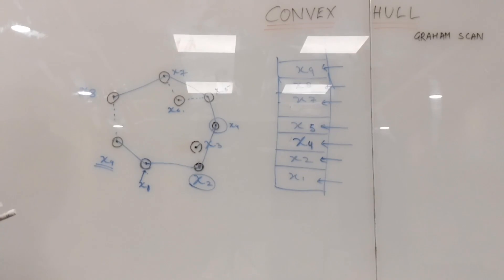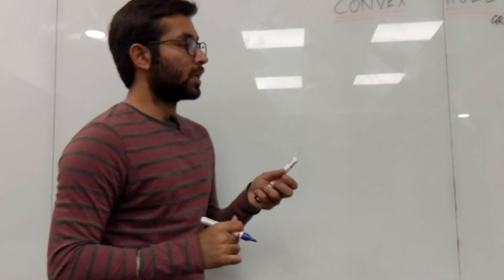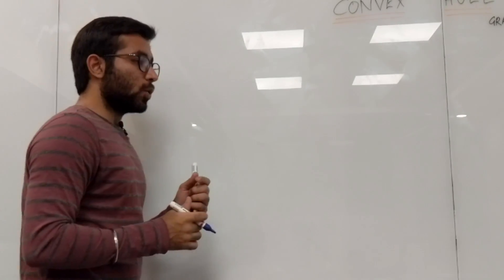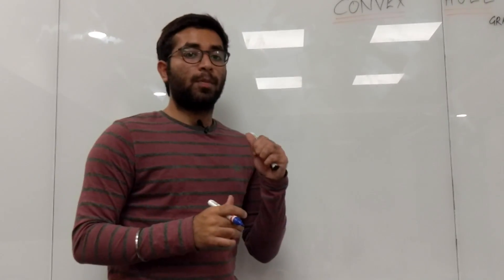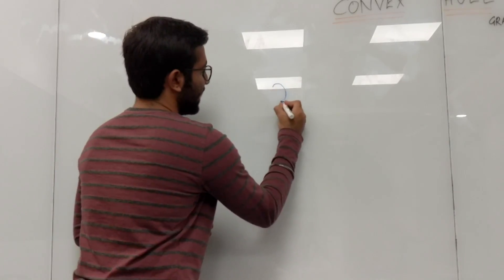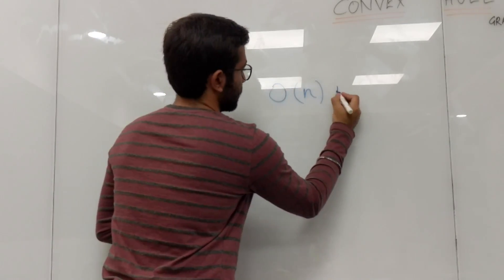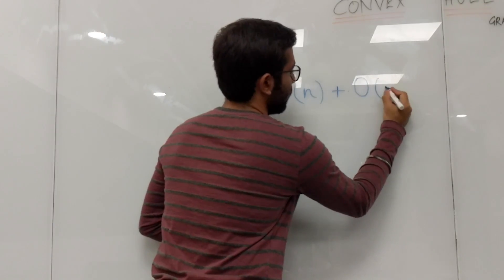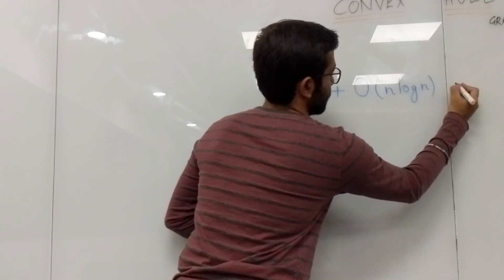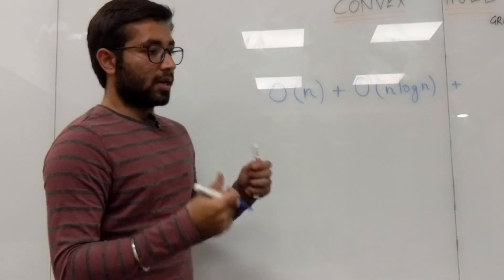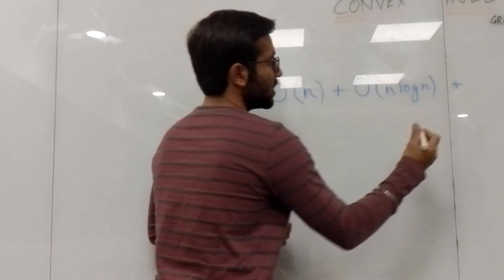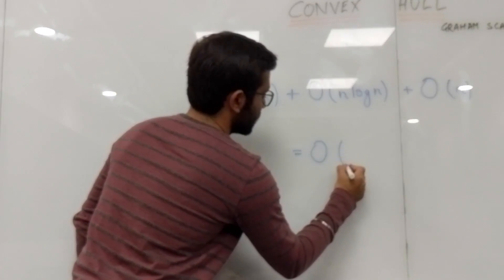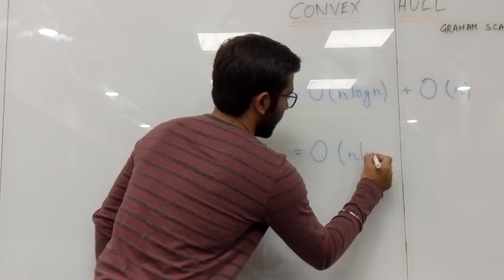So now we look into the complexity of the algorithm. We'll break it into step-by-step procedure. The first step included finding the point which has minimum y coordinate, which will take O(n) time. The second step involves sorting the points, which will take O(n log n) time. And the third procedure required us to process each point once, and hence it will be an O(n) operation. So in net, the complexity of the algorithm will be O(n log n).